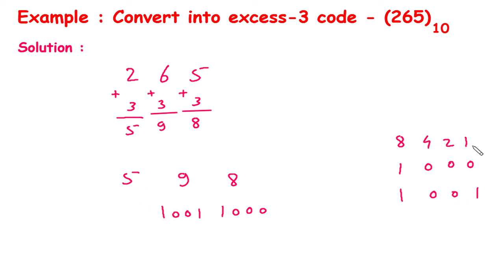Then this 5. 4 plus 1 is 5. So this will be 0, 1, 0, 1.